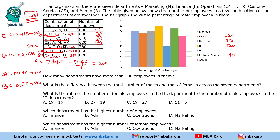For equation 5 containing HR, finance, operations, and IT: finance, operations, and IT are already known. Those three total 590, and this combination totals 780. So HR equals 780 minus 590, giving HR as 190 employees.